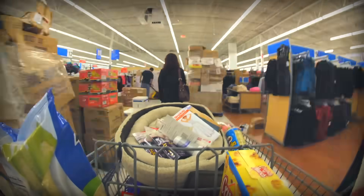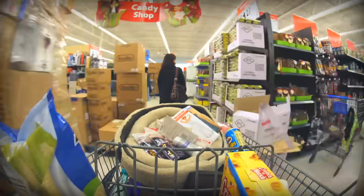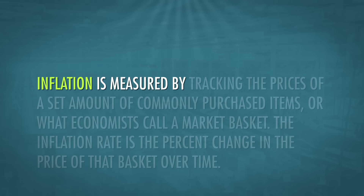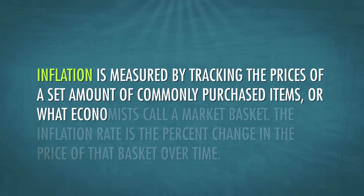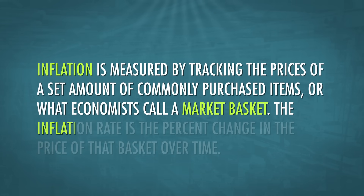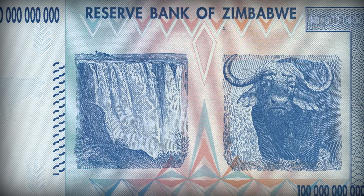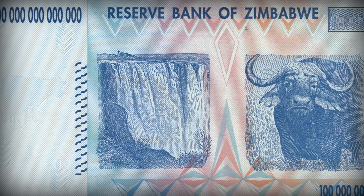Let's move on to the third economic goal: stable prices. While you might like the idea of the stuff you buy getting cheaper across the board, falling prices are not really a good thing. Average prices in Greece have fallen about 2 percent recently, and during the 1930s the inflation rate in the U.S. was negative 10 percent. The goal is to keep prices stable — mainly to avoid rampant inflation, or rising prices, but we also want to avoid excessive deflation, which is falling prices. Inflation is measured by tracking the prices of a set amount of commonly purchased items, or what economists call a market basket, and the inflation rate is the percent change in the price of that basket over time. Too much inflation is bad because it decreases the purchasing power of money — you can buy less stuff for the same amount of money.